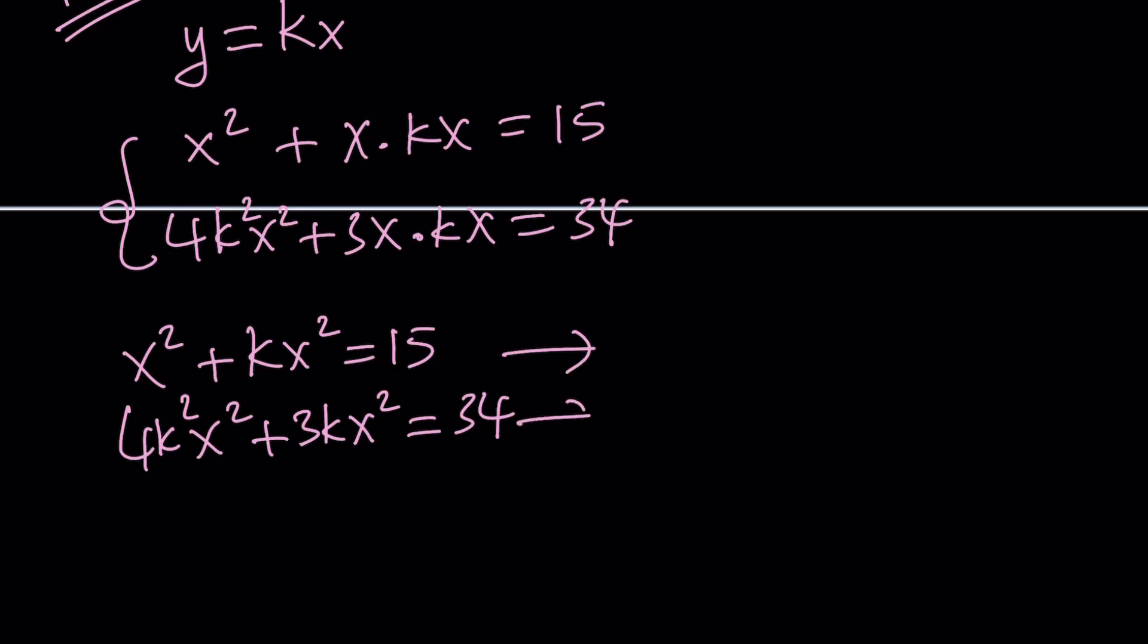Let's simplify both equations. The first one is x²(1 + k) = 15, and the second one is x²(4k² + 3k) = 34. Now, we're going to divide these equations. The motivation behind it? We'll get rid of x. Isn't that awesome?